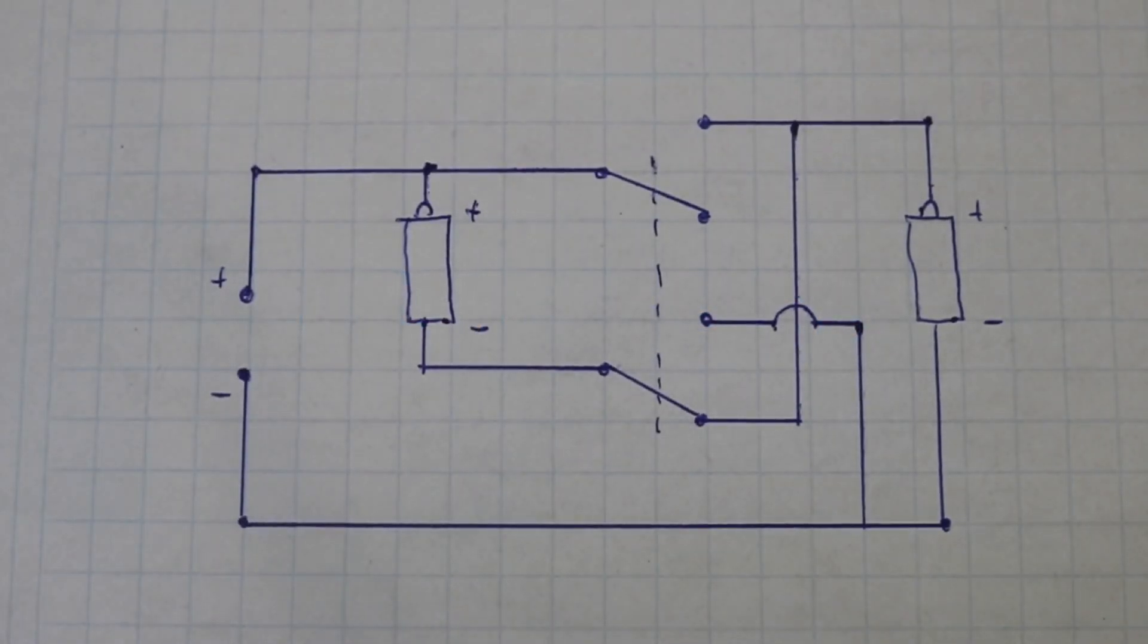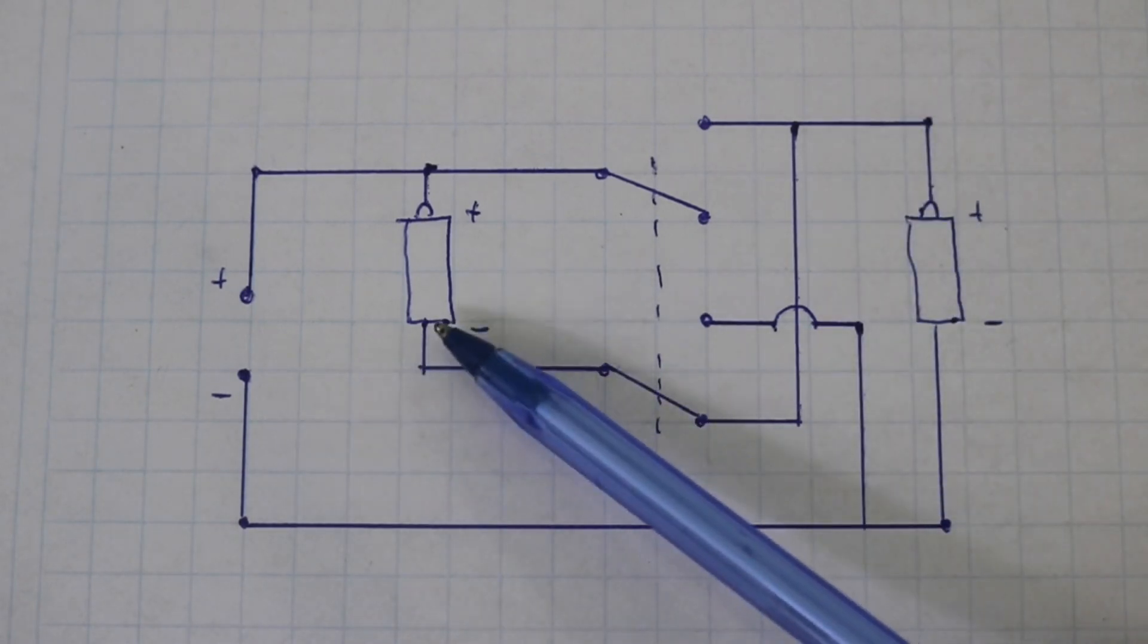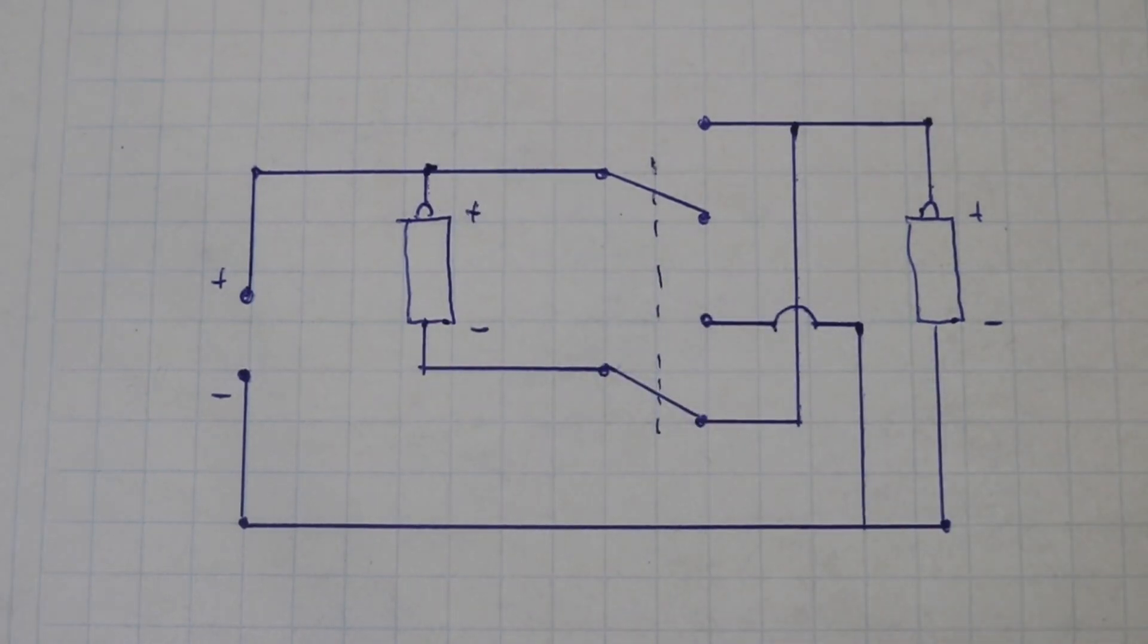Now, if you flip the switches to the other position, now your batteries are connected in series. You can see here negative, positive, negative, positive. That is, you have the positive of one battery connected to the negative, and therefore they are in series.